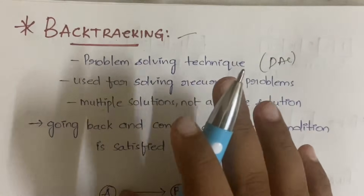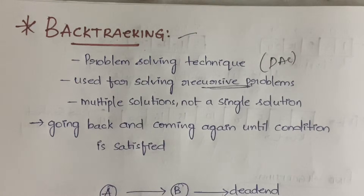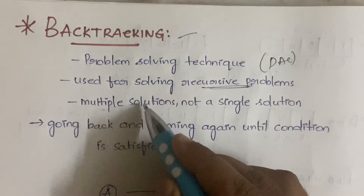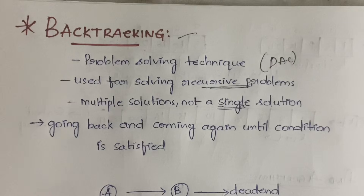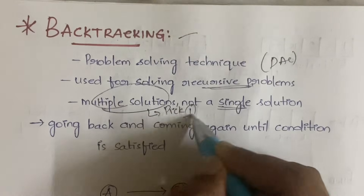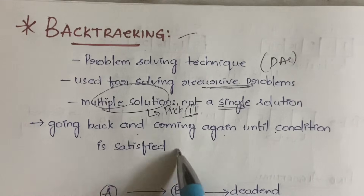Among one of them is backtracking, and this is used mainly to solve recursive problems — that means the part of the algorithm that happens repeatedly. With the help of backtracking you will be getting multiple solutions, not a single solution. This is not an optimization problem, which gives one best solution. In backtracking you get multiple solutions and from those you pick one optimal solution.